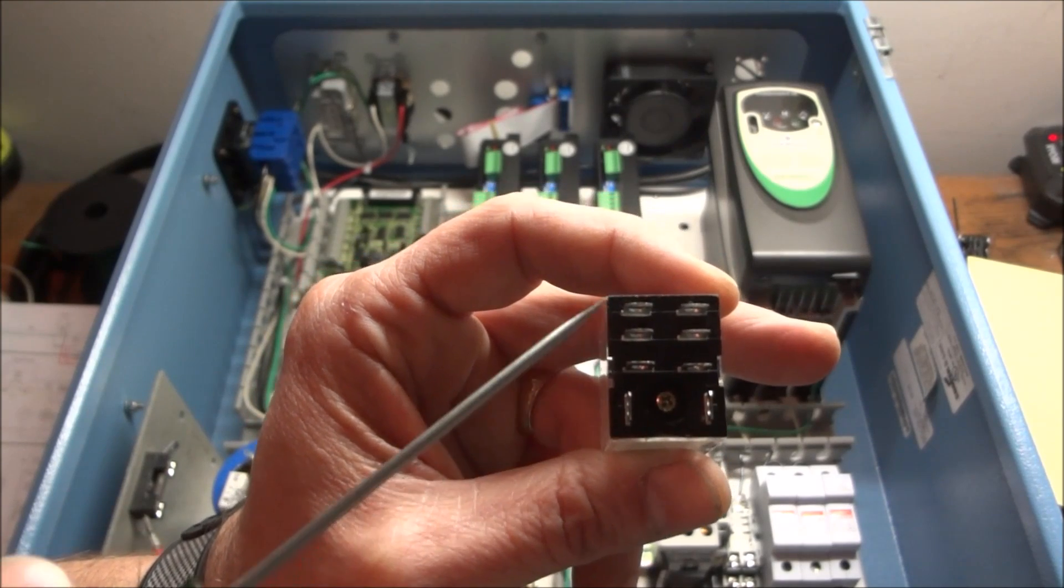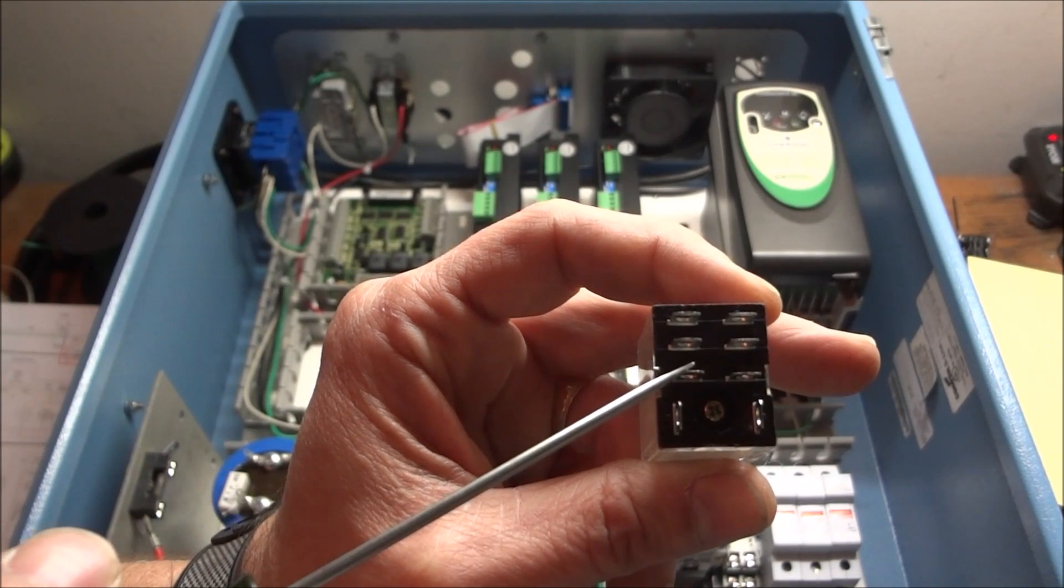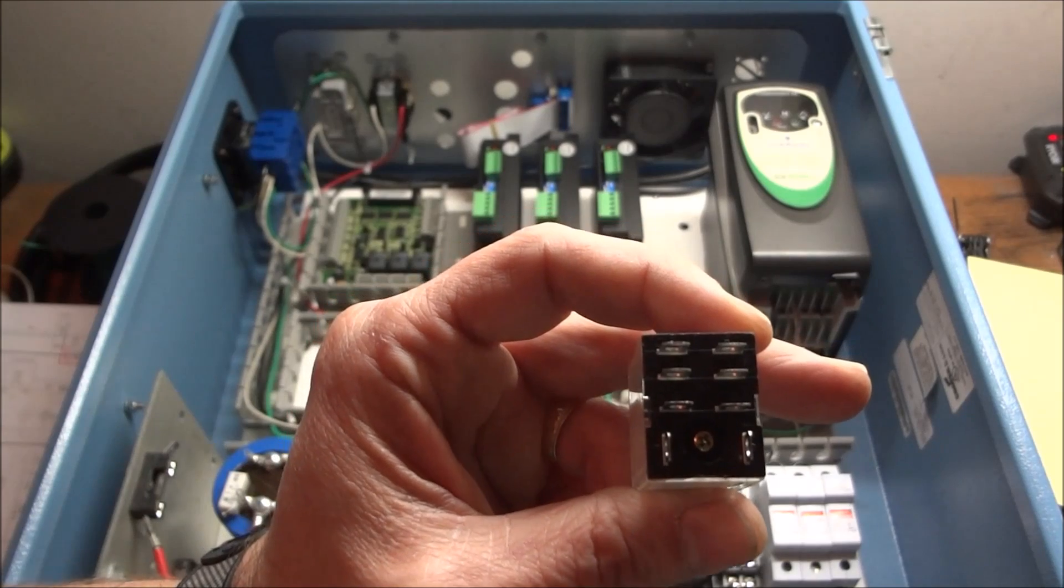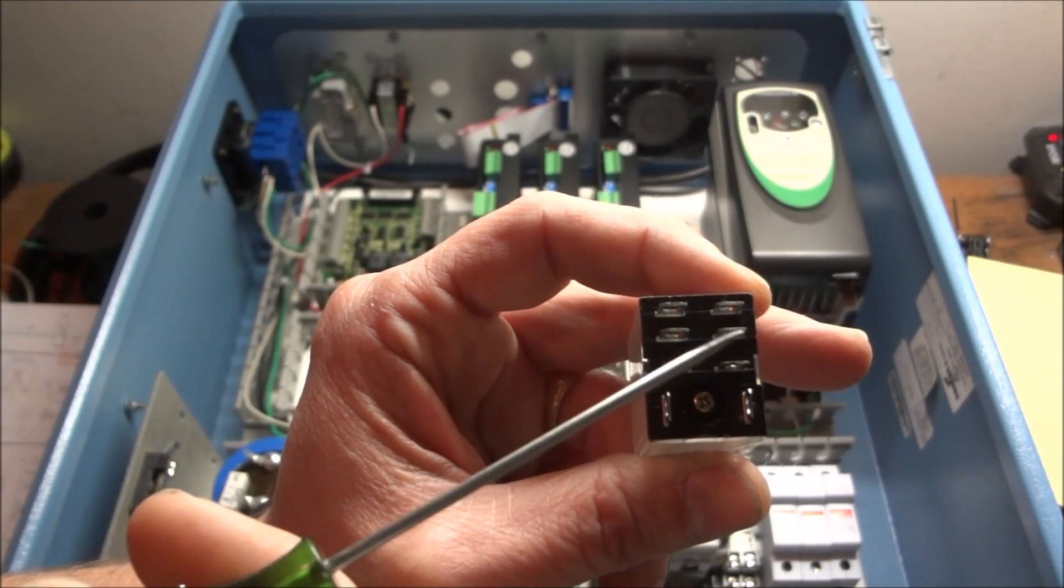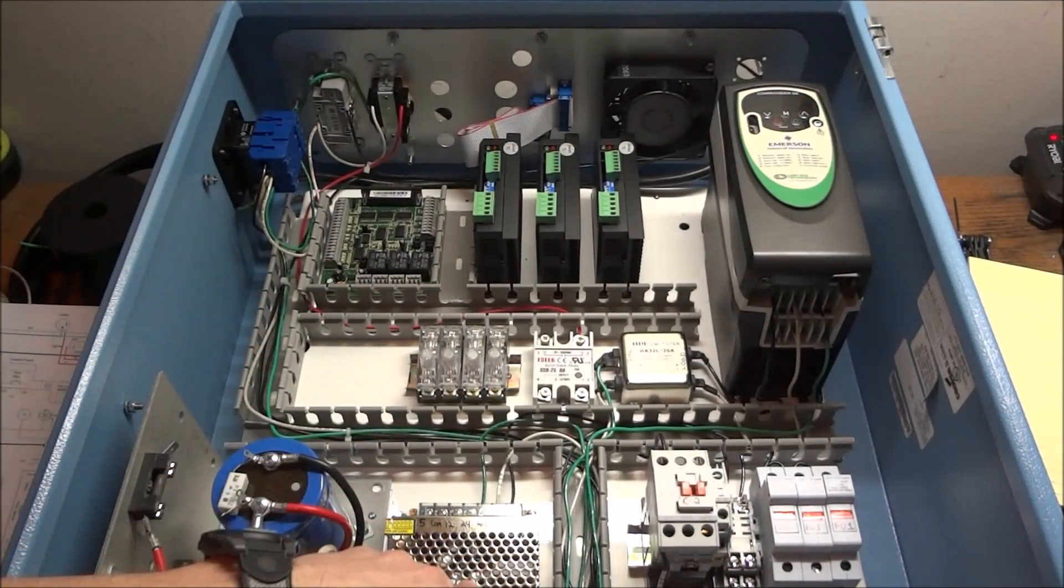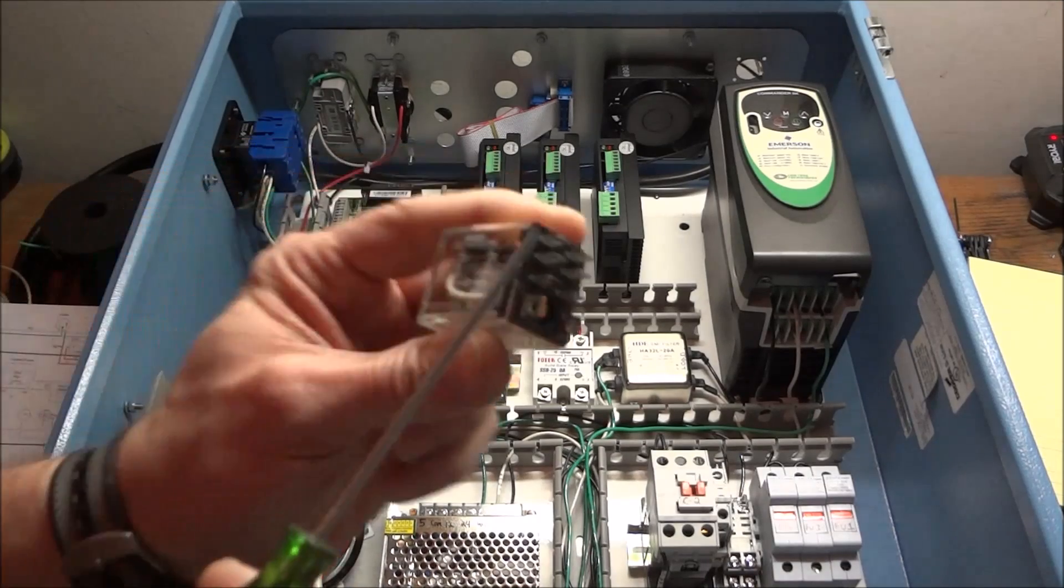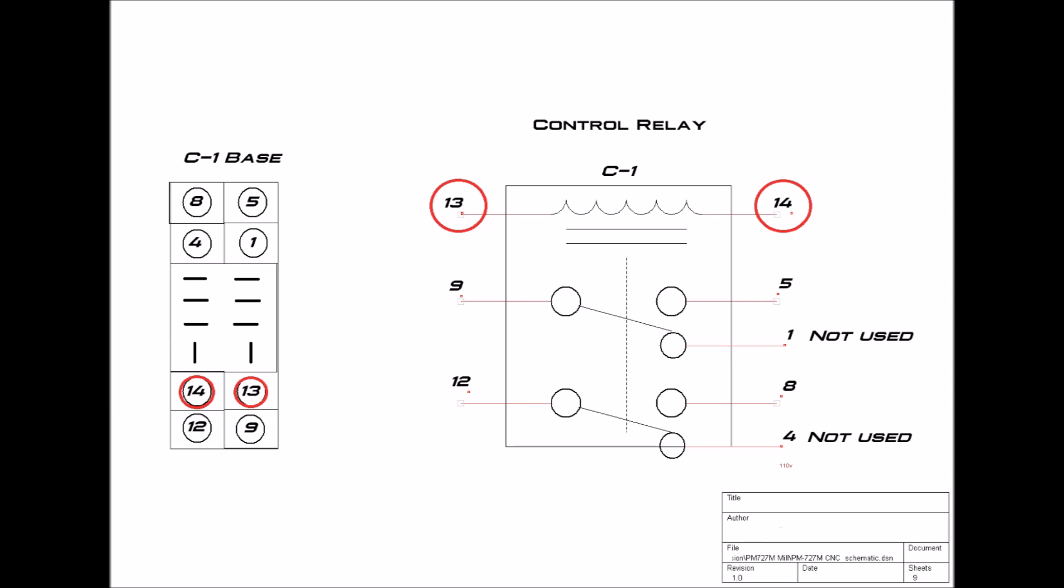Once power is applied to the coil, it switches and these are our contacts. These are our normally open contacts, and this between here and here is the switch, and here and here is the switch with power applied. So we will be using these two center contacts for our two C1 contacts to turn on our tri-power power supply and our 48 volt power supply. The normally closed contacts we will not be using at this time.